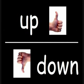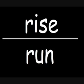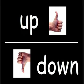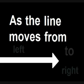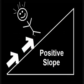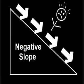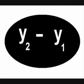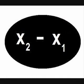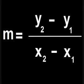The slope, it's the rise over the run — the distance up or down, divided by the distance side to side. As the line moves from left to right, positive slopes go up, negative slopes go down. Y2 minus Y1 goes in the numerator, X2 minus X1 in the denominator.